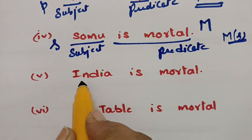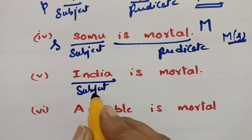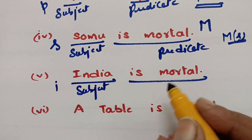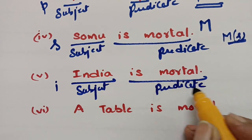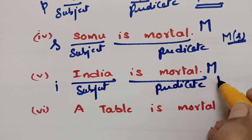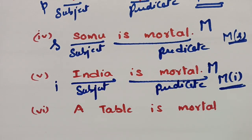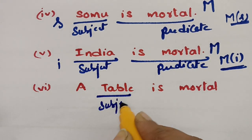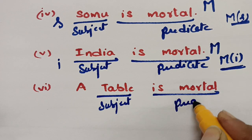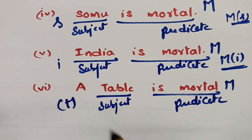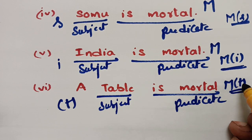'India is mortal' — India is the subject (small i), 'is mortal' is the predicate (capital M), so this is M(i). 'A table is mortal' — table is the subject (small t), 'is mortal' is the predicate, so this is M(t). Predicates are always represented by capital letters; subjects are always represented by small letters.